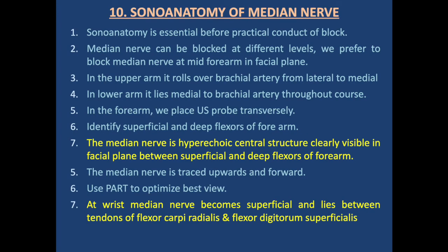Sonoanatomy is essential before the practical conduct of the block. The median nerve can be blocked at different levels; we prefer to block it at the mid forearm in the interfascial plane. In the upper arm it rolls over the brachial artery from lateral to medial; in the lower arm it lies medial to the brachial artery throughout. In the forearm, we place the ultrasound probe transversely, identify superficial and deep flexors, and the median nerve appears as a hyperechoic centrally placed structure clearly visible in the fascial plane. At the wrist, the median nerve becomes superficial and lies between the tendons of flexor carpi radialis and flexor digitorum superficialis.